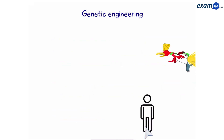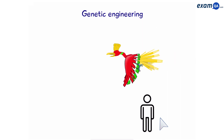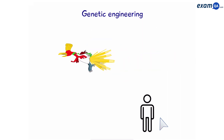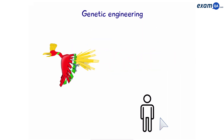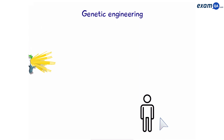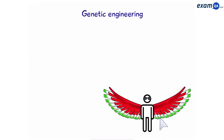Using genetic engineering gives us many advantages. In this case, we used bacteria to make human insulin. Perhaps one day we could do even more adventurous stuff — but that's for another video.